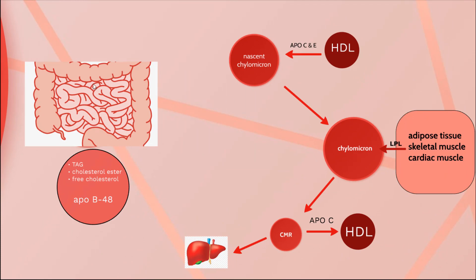If you have watched our video about lipid digestion and absorption, you might remember that the end products of lipid digestion in the intestine interact with an apoprotein and assemble themselves into chylomicron, which is secreted into the circulation via the lymphatic system. This is called the nascent chylomicron — it is not yet matured and needs more apoproteins to be fully matured.